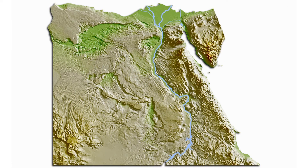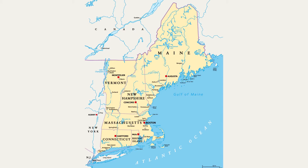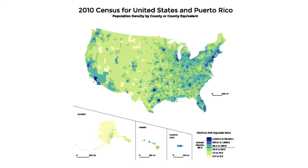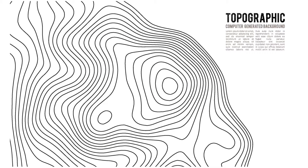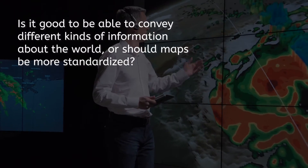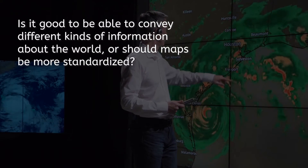Physical maps highlight the physical features of a particular area, like mountains, rivers, or deserts. Political maps show features determined by people, such as national boundaries, state lines, and capital cities. Special purpose maps show very specific data, like population density, the ridges of the mountain you're hiking on, global flight patterns, or imminent weather events. Let's take a second to consider the value in these different designs. Is it good to be able to convey different kinds of information about places that appear on maps? Take a minute and respond in your lesson guide.